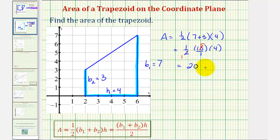That would be twenty. So the area is twenty square units, which means exactly twenty squares would fit inside this trapezoid.